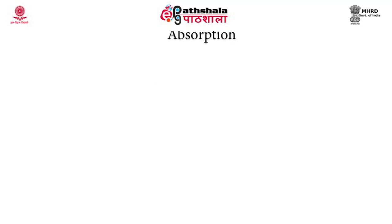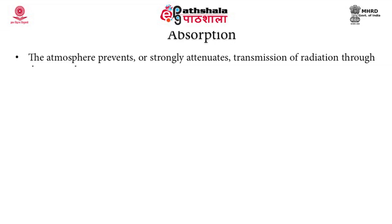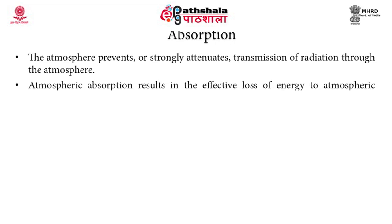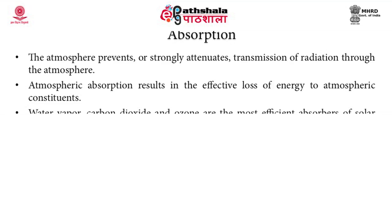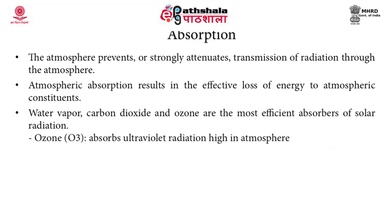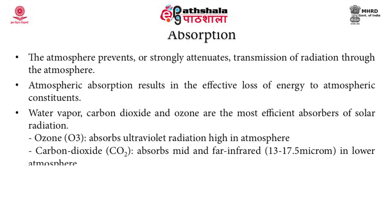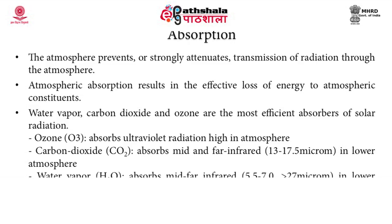The second factor which causes attenuation is absorption. The atmosphere prevents or strongly attenuates transmission of radiation, resulting in effective loss of energy to atmospheric constituents. Primarily, water vapor, carbon dioxide, and ozone molecules are the most efficient absorbers of solar radiation. The ozone molecule absorbs ultraviolet radiation high in the atmosphere. Carbon dioxide absorbs middle and far infrared radiation in the range of 13 to 17.5 microns in the lower atmosphere. Water vapor molecules absorb middle to far infrared radiation in the lower atmosphere, ranging from 5.5 to 7 microns and also greater than 27 microns.